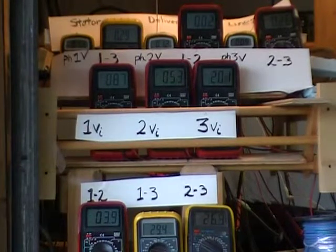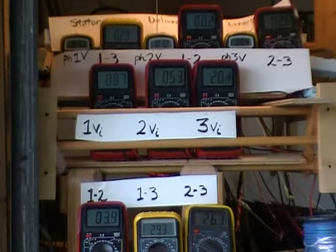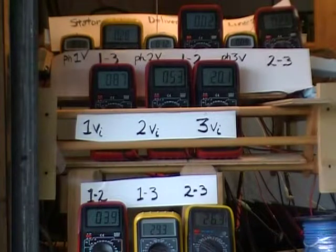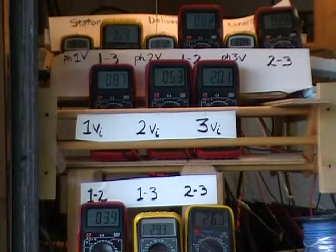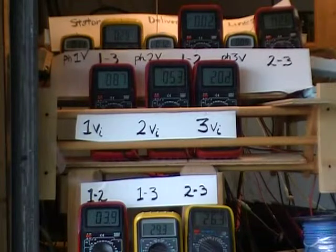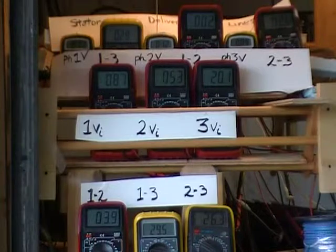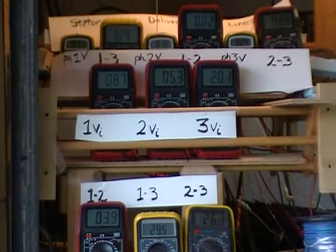Now you're going to notice there's a row of meters in the background. The left one at the very top is 1.1 volts from the stator 1. The next one is 1.2. And phase 3 is 0.09.